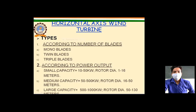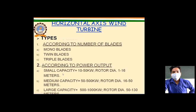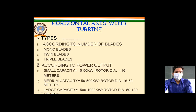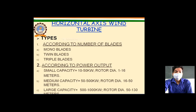According to power output, in the horizontal axis wind turbine the small capacity ranges from 10 to 50 kW with a rotor diameter of 1 to 16 meters. For medium capacity, that is 50 to 500 kW, the rotor diameter is 16 to 50 meters. For large capacity, the power is 500 to 1000 kW with a rotor diameter of 50 to 130 meters.